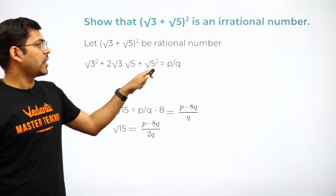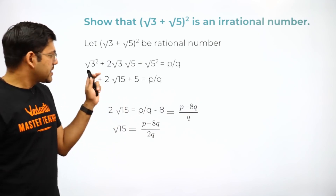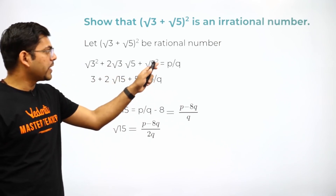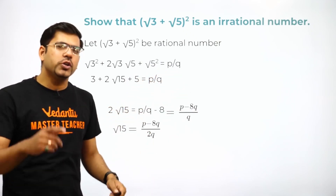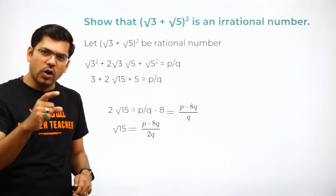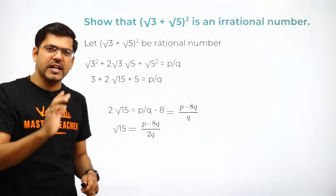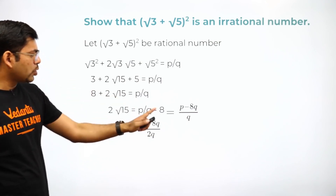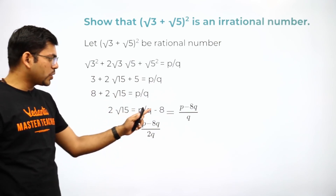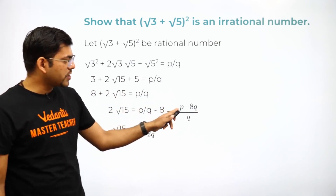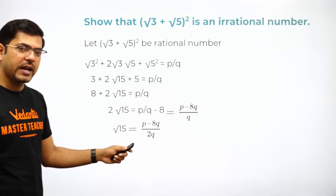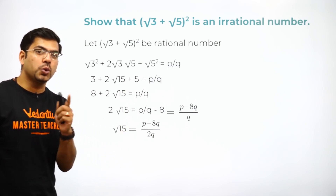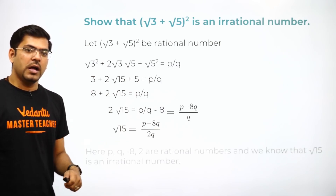Squaring both sides using (a+b)² = a² + 2ab + b²: we get 3 + 5 + 2√(3×5) = p/q, since rational numbers are of the form p/q. This gives 8 + 2√15 = p/q. Rearranging: 2√15 = p/q − 8 = (p − 8q)/q. Therefore √15 = (p − 8q)/(2q).